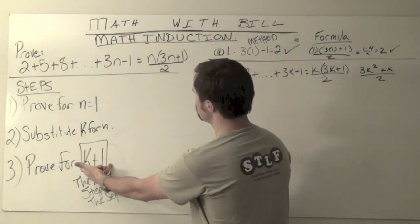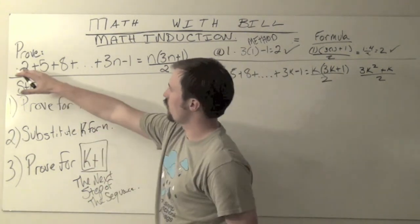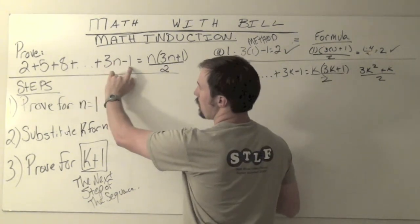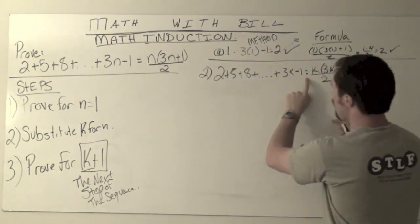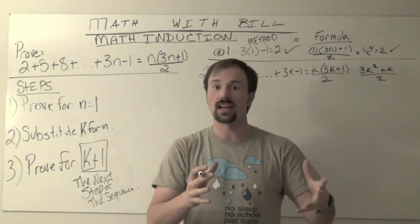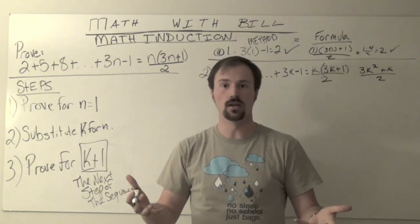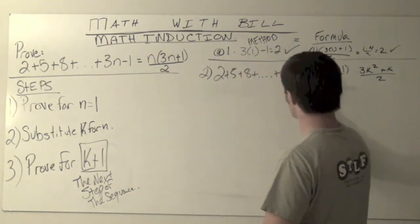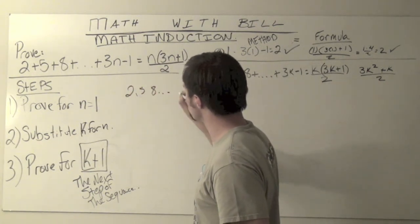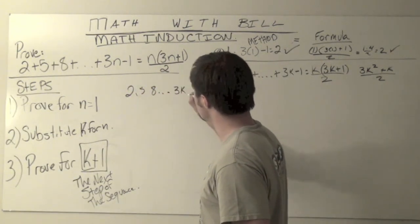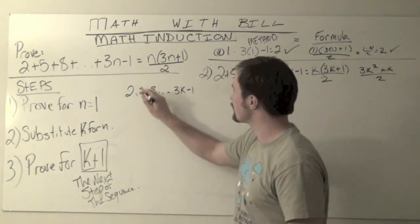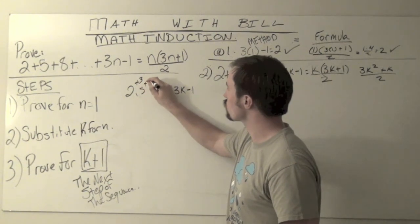k plus 1 in our progression of things—the next step after 3n minus 1 or my 3k minus 1—to go to my next step again I'm adding 3. And so the next step after 3k minus 1, okay so we've got our 2, 5, 8, so on and so forth, we've got 3 times the k minus 1. If each time we're moving a step of 3, adding 3 each time,